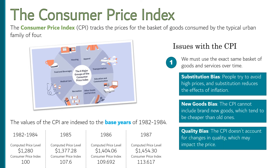The last bias I'll mention is that the CPI doesn't account for changes in quality. Cars have gotten a lot more expensive over time, but they have also gotten a lot safer — they get better gas mileage and they're more comfortable to drive. The CPI only sees rising prices; it doesn't measure that increase in quality. So all three of these sources of bias lead economists to believe that the CPI will typically overstate inflation.